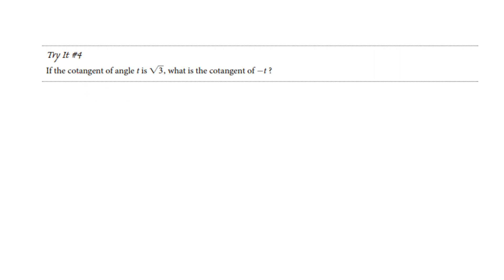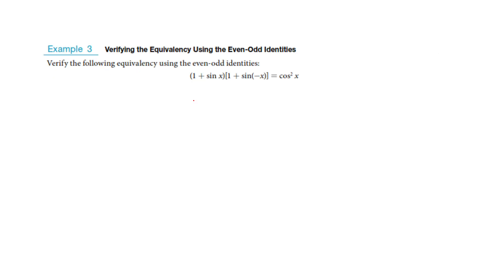If we start with cotangent of t equal to the square root of 3, well cotangent is based on both cosine and sine, so it's going to be an odd function. So if you put in t and get square root of 3, then putting in negative t gives you negative square root of 3. We're going to have those even and odd identities as an important part of what we're doing here.